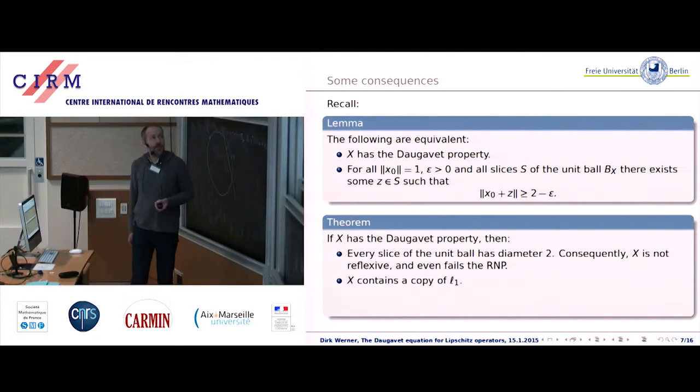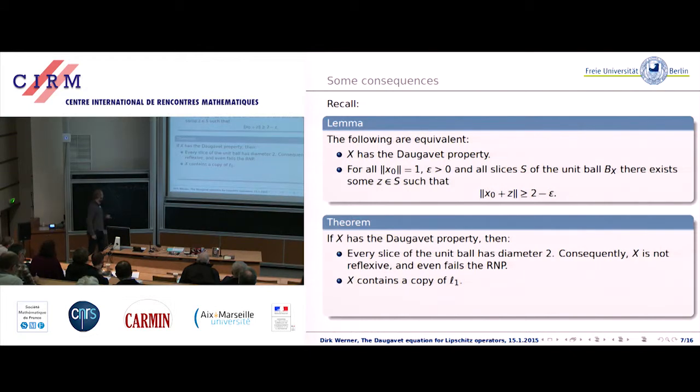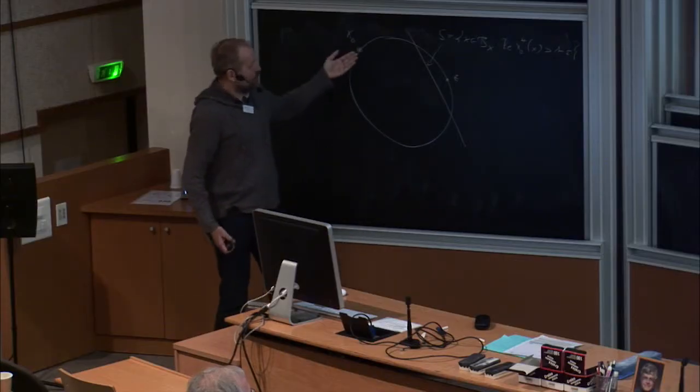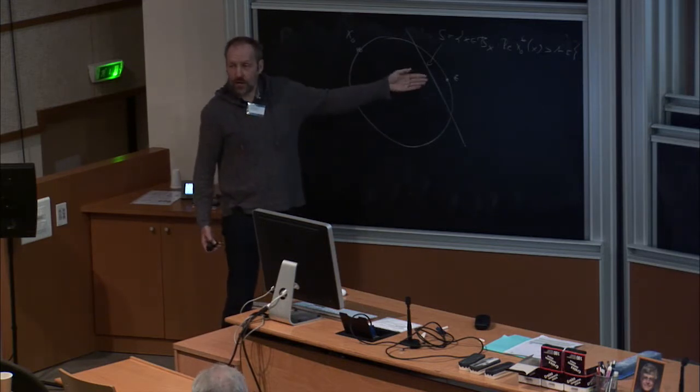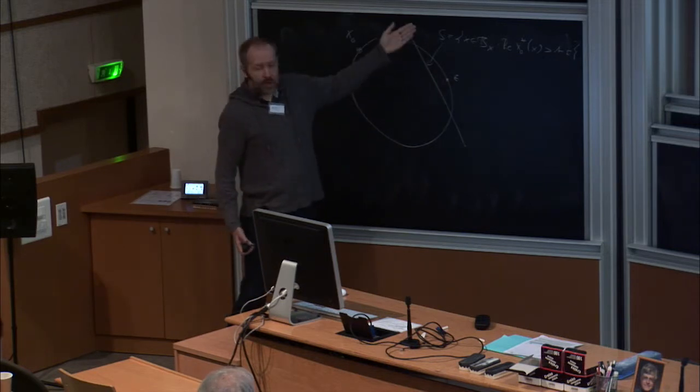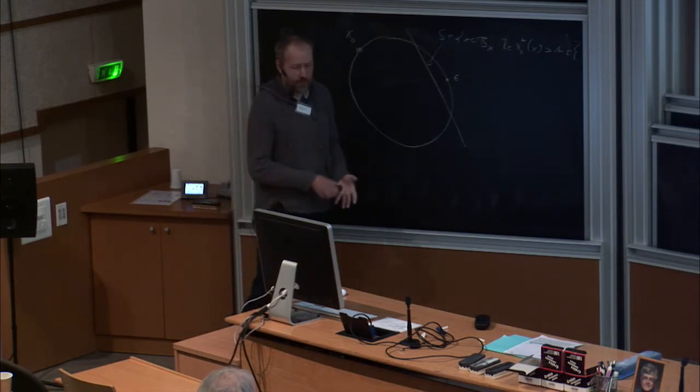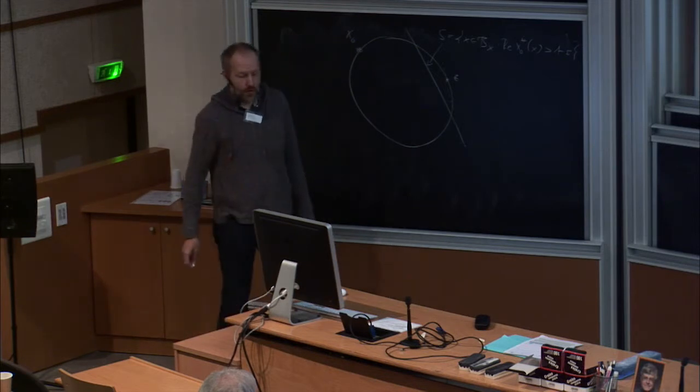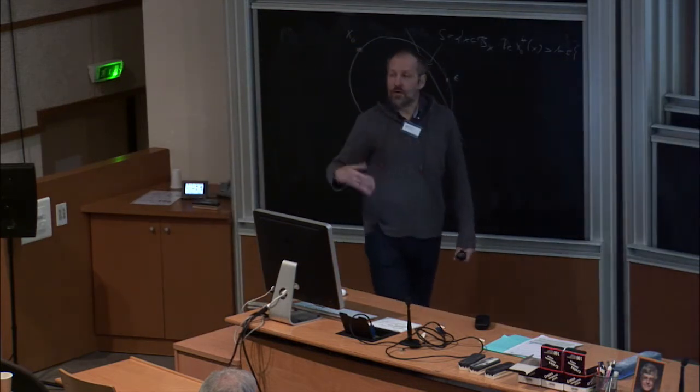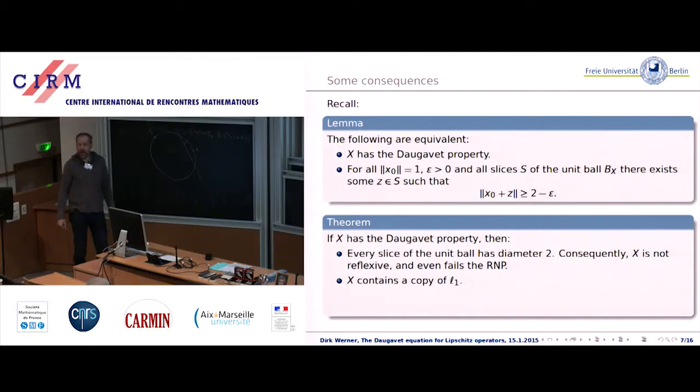Another consequence is such a space must contain a copy of L1. This follows from an iterative construction because when you have such a situation, a point and a slice and you're looking at something at say distance 2 from the point, you find not just one point, you find a whole lot of points, namely a whole subslice of points. There's a whole subslice that works and then you can iterate the construction and before long you end up constructing a copy of L1 in the space.